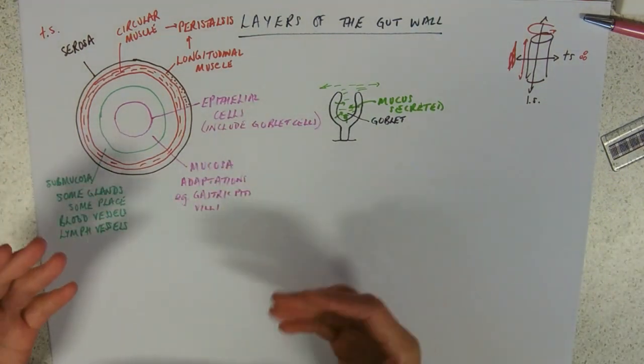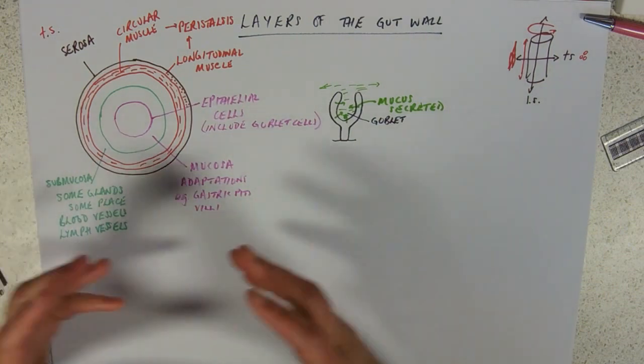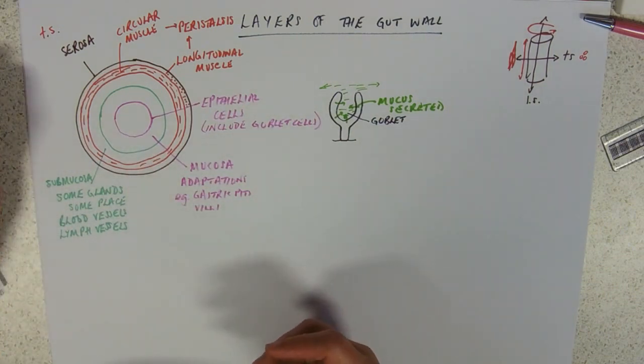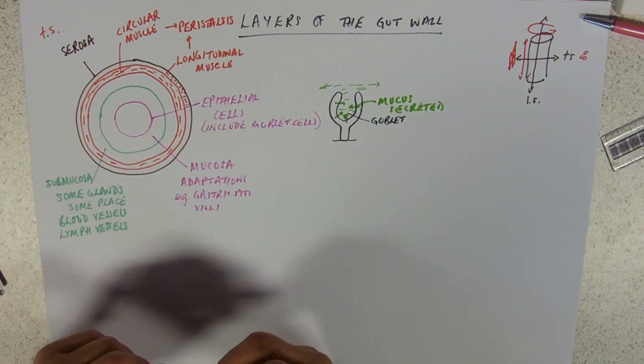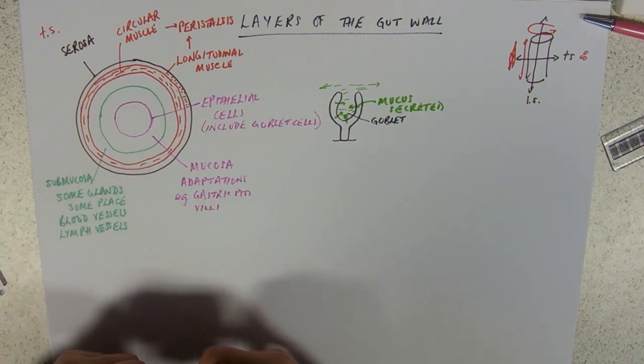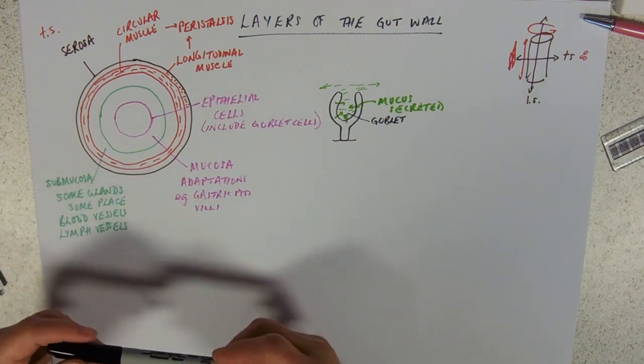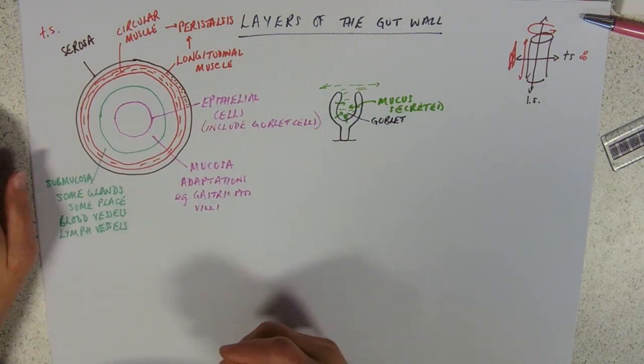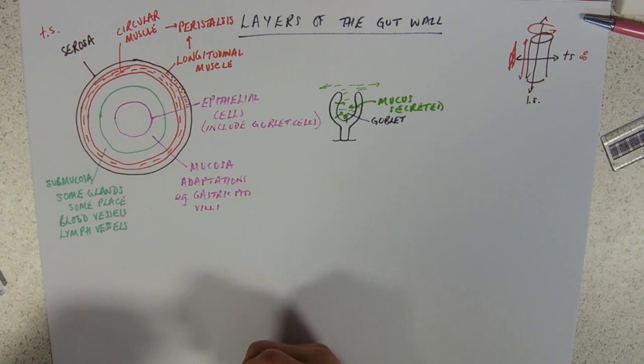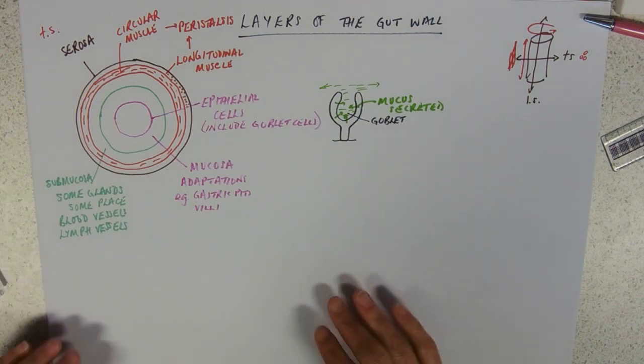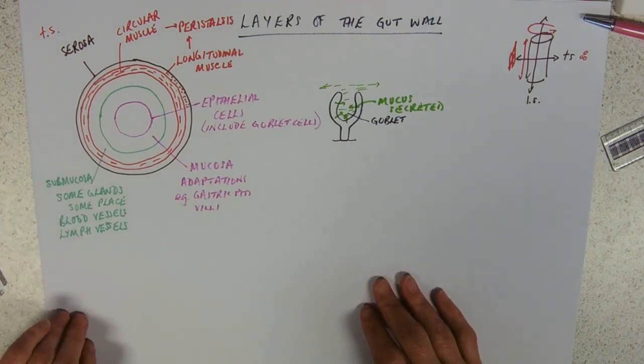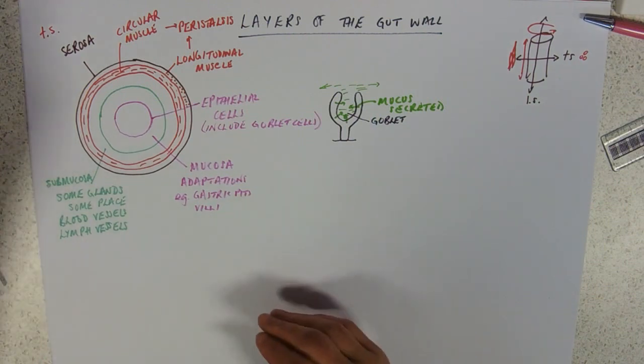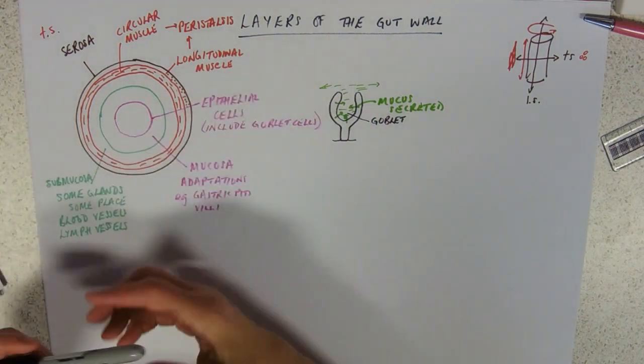That's kind of the layers of the gut, but of course you're not going to see maybe a circular diagram. You're far more likely to see a picture of a villus or the duodenum and have to identify them from there. Let me just look at longitudinal. So we've done a transverse section.